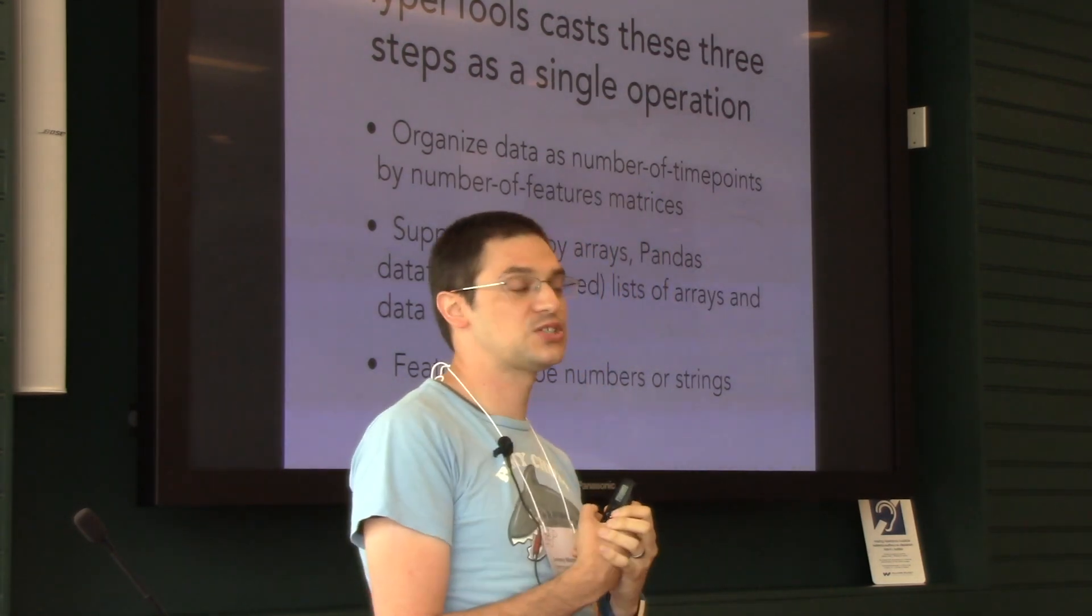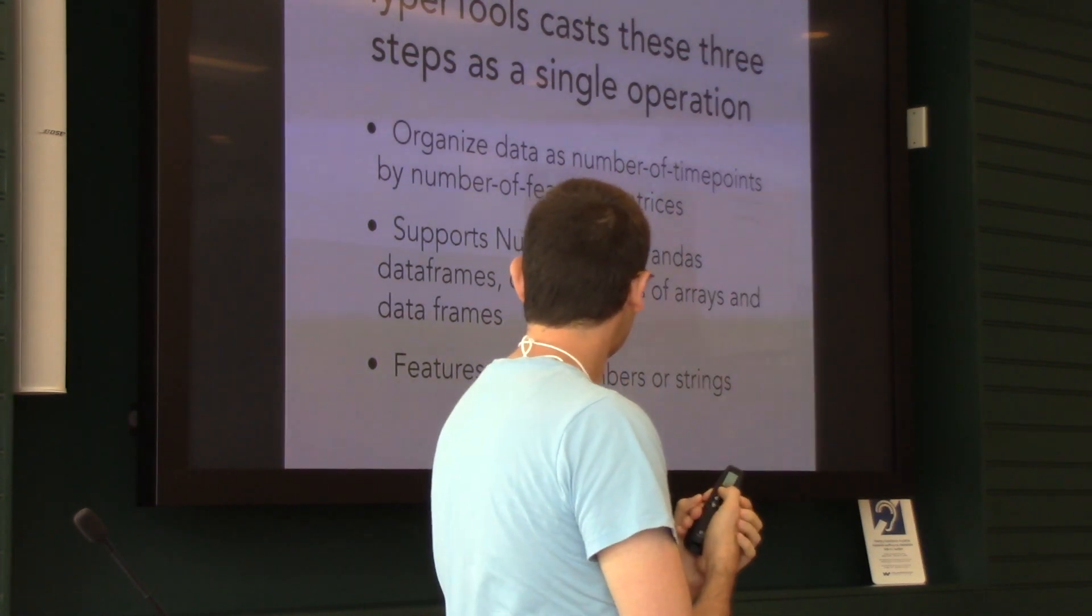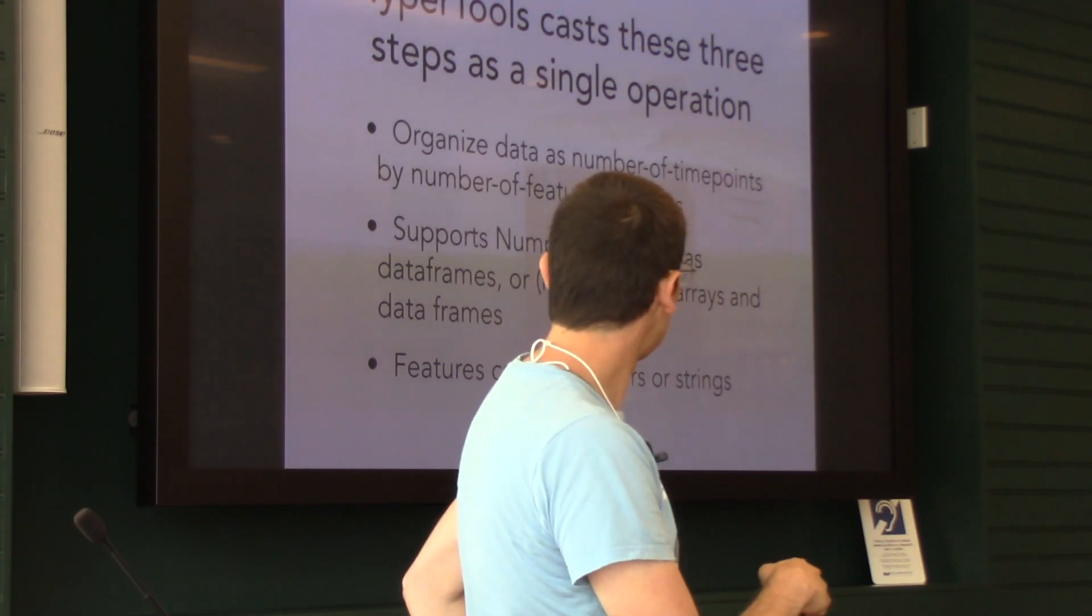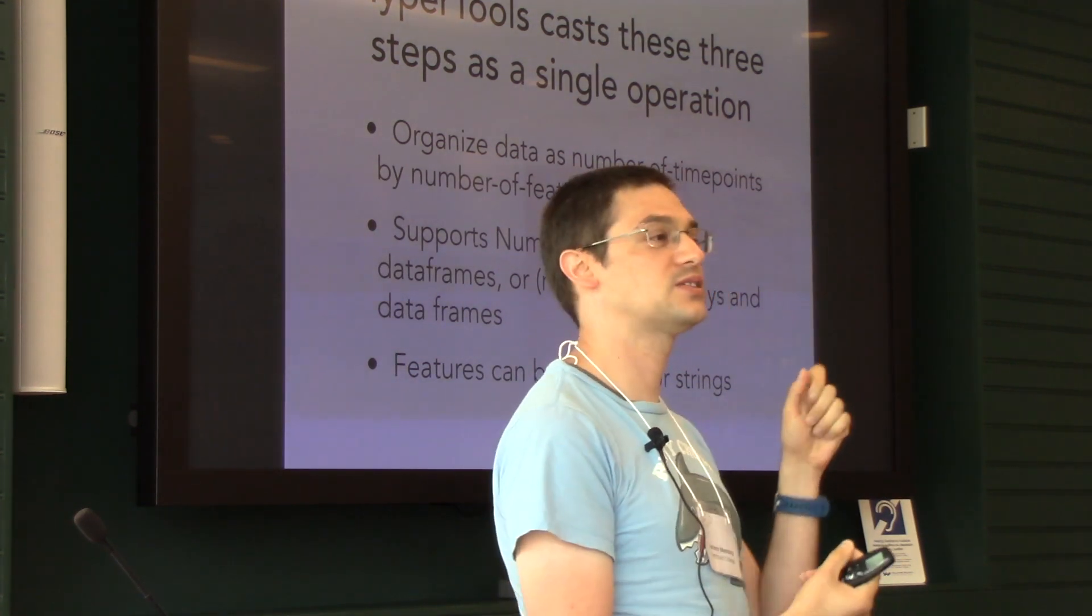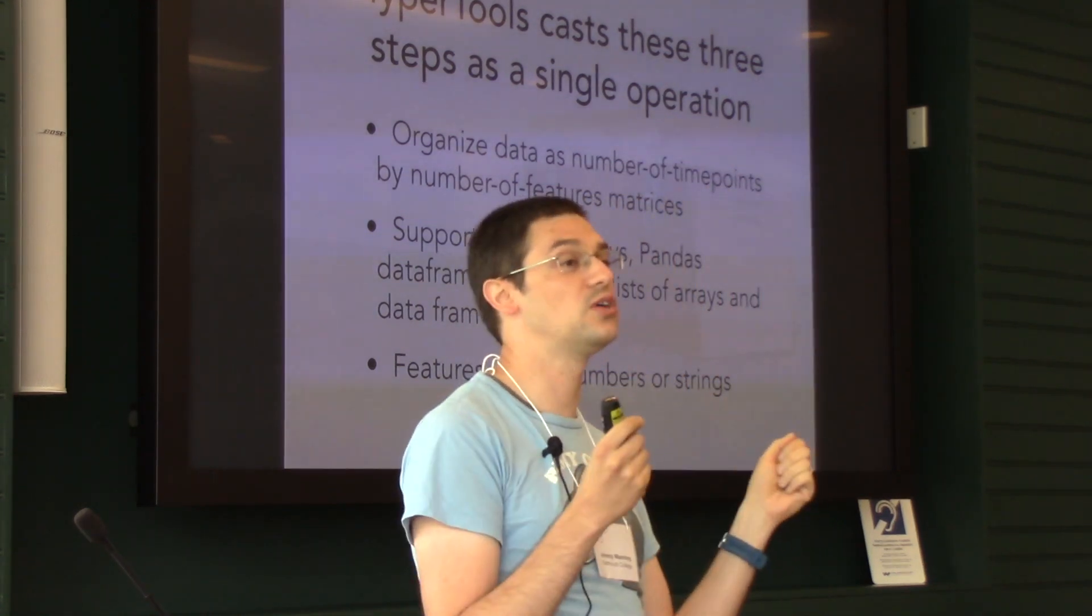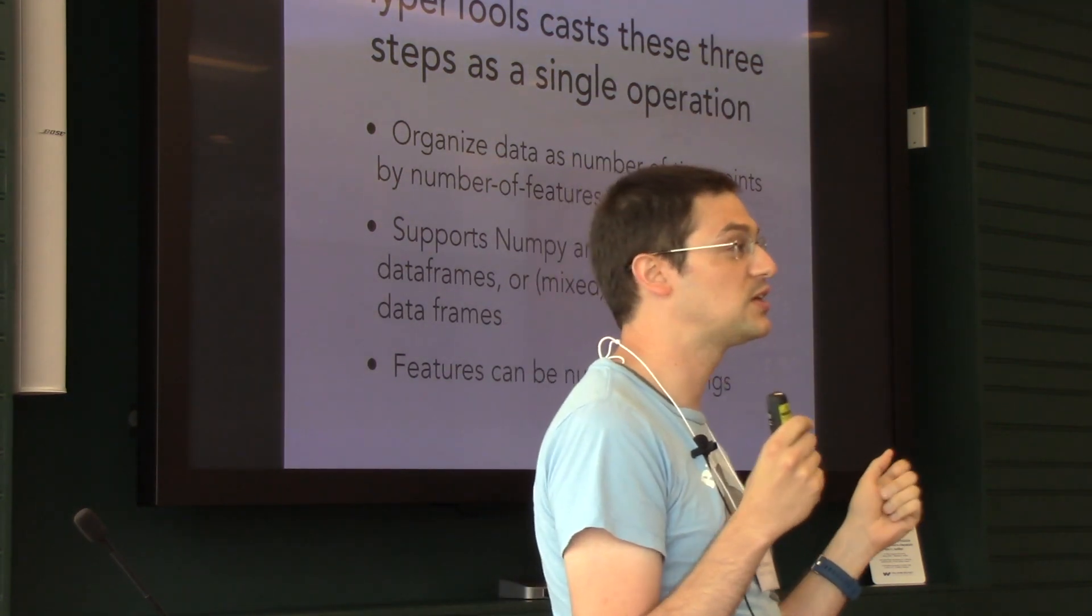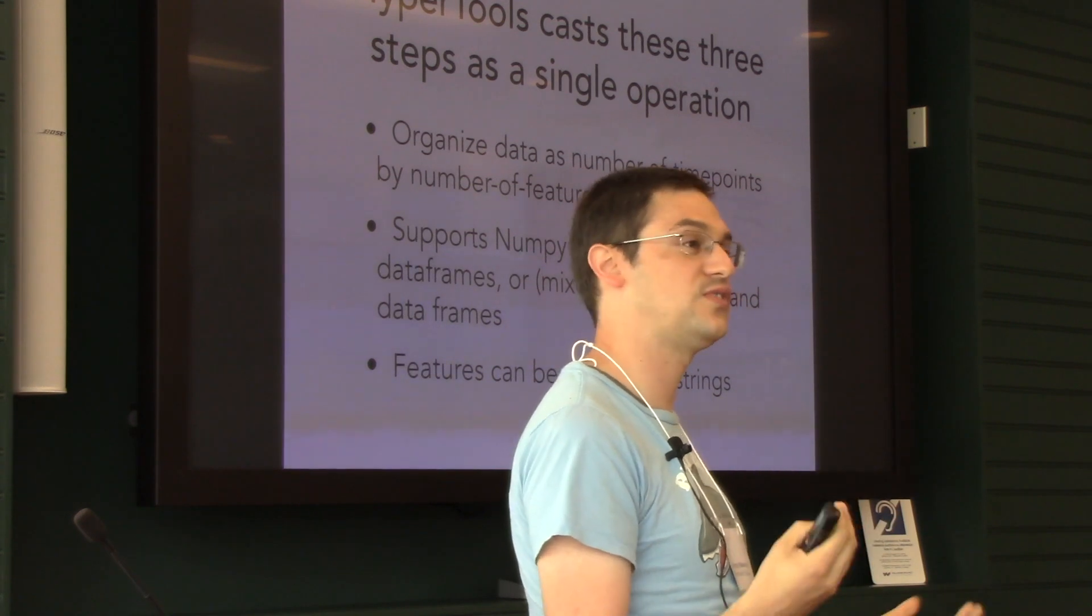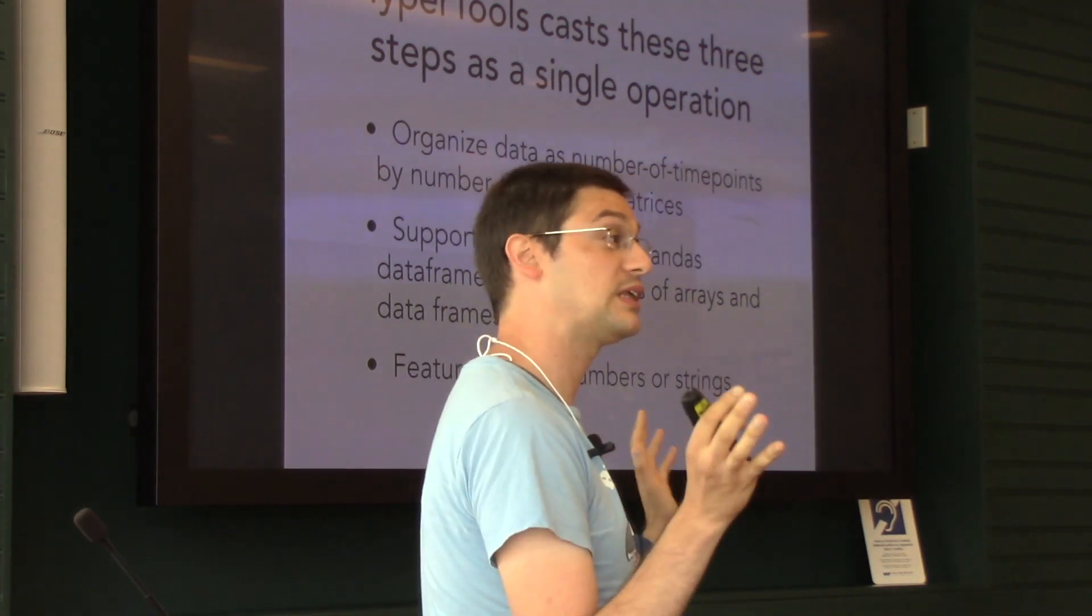The toolbox supports a number of useful formats. You have to organize your data as matrices or arrays with number of time points as rows and number of features as columns. Each row could be a brain image reshaped into a vector, a movie frame reshaped into a vector, the power spectrum of an audio or electrophysiological signal, or a list of words—a really flexible format.